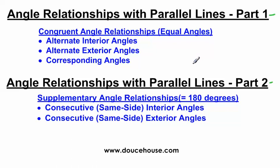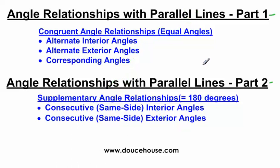These angle relationships, all five of them, only exist if we have parallel lines. If we do not have parallel lines, then these angle relationships can't happen. Whenever we have parallel lines, you need to be thinking that these angle relationships could exist. In my class, I teach geometry, and we talk about these angle relationships throughout the year. So it's very important that you pay attention and understand these concepts - it'll just make life a lot easier.